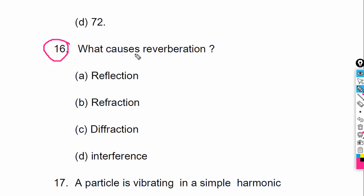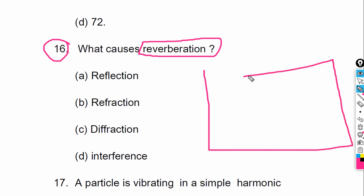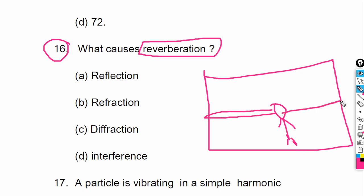What causes reverberation? The options are: reflection, refraction, diffraction, and interference. The concept here is that the sound spoken in a room reflects from the walls repeatedly, causing prolonged sound — that is called lengthening. So the correct answer is reflection.